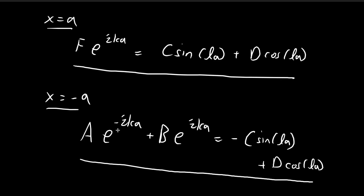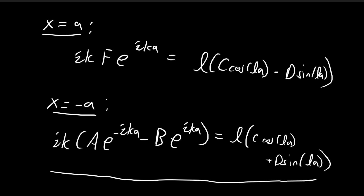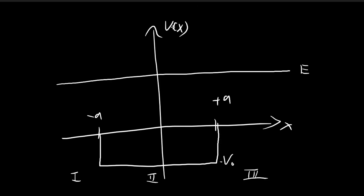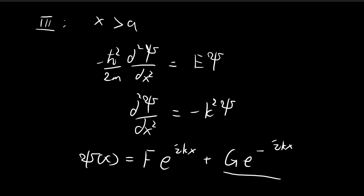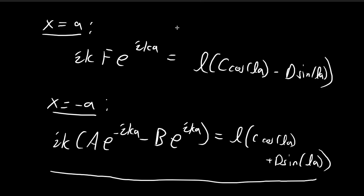Combining all four expressions from the continuity requirements — with tedious calculations — one can obtain the transmission and reflection coefficients. The detailed derivation is left as a problem in this section. In summary, this is how you set up the scattering state: solve the Schrödinger equation in three regions and apply continuity conditions to find the transmission and reflection coefficients.